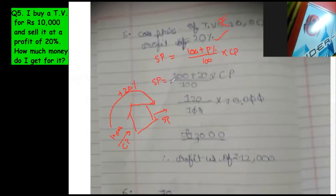And this is not profit. This is selling price. You are directly finding selling price. This is method 1. I will show another method also.